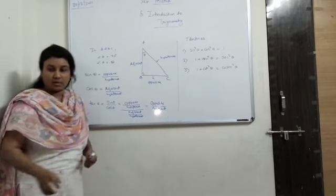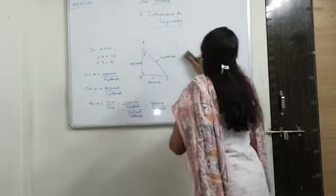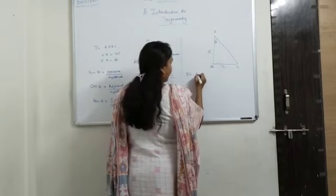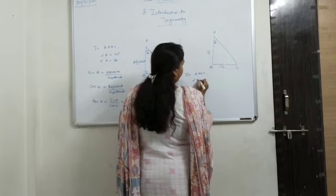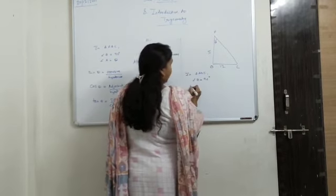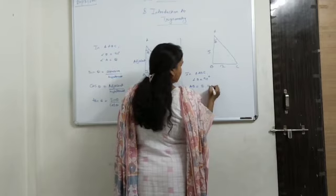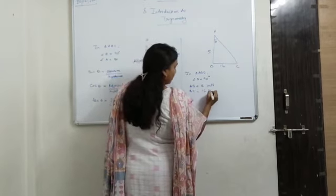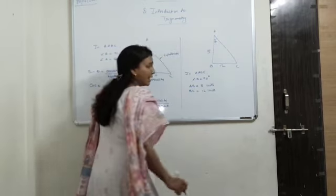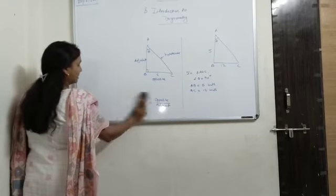Now we will take one example on this so that it will be more clear to you. In triangle ABC, we have angle B equal to 90 degree. AB equal to 5 units, BC equal to 12 units. Now, as you know, this is a right angle triangle, so here you can use the Pythagorean theorem to find the hypotenuse.